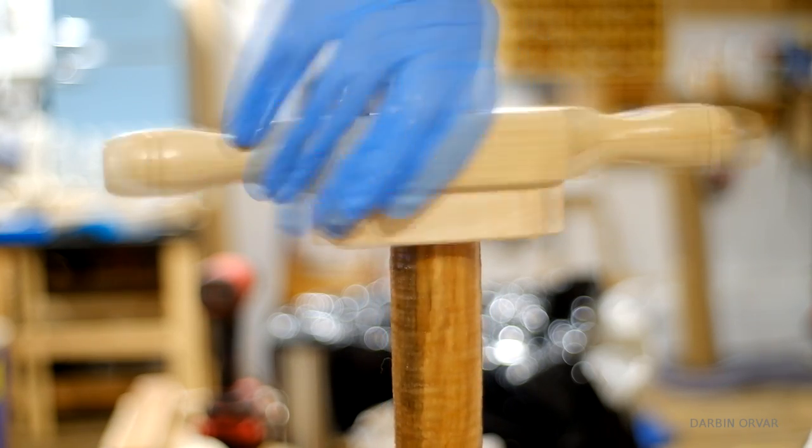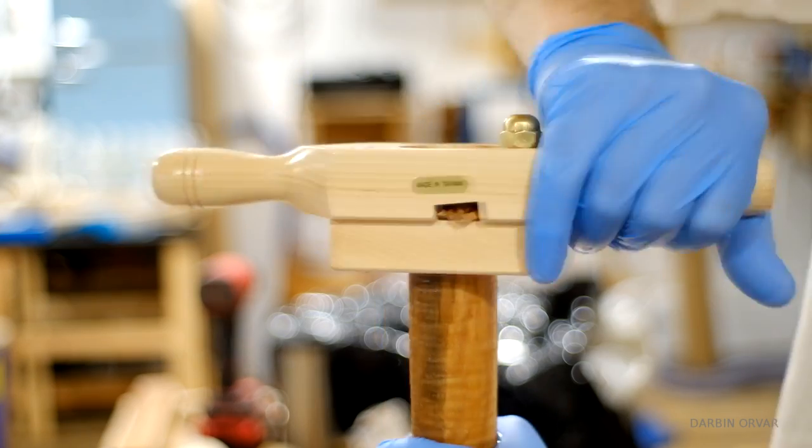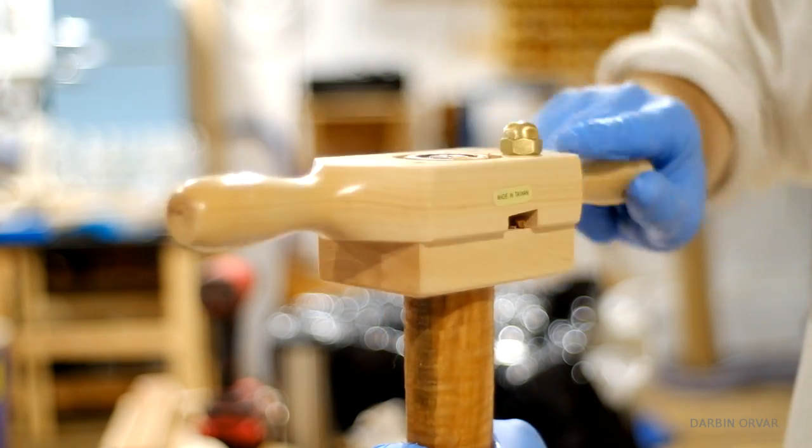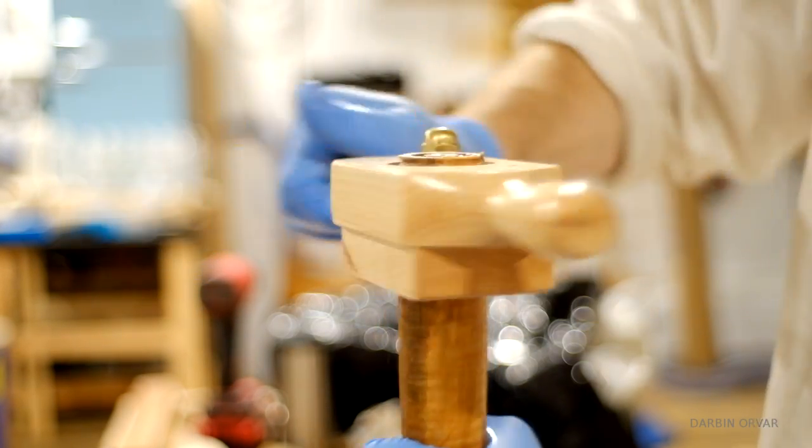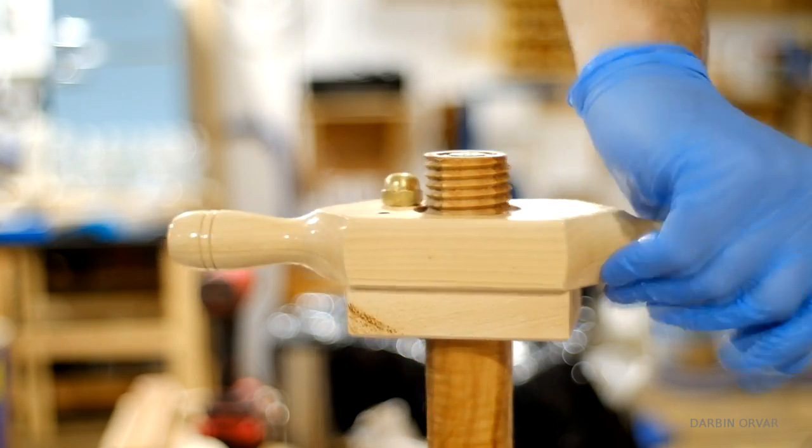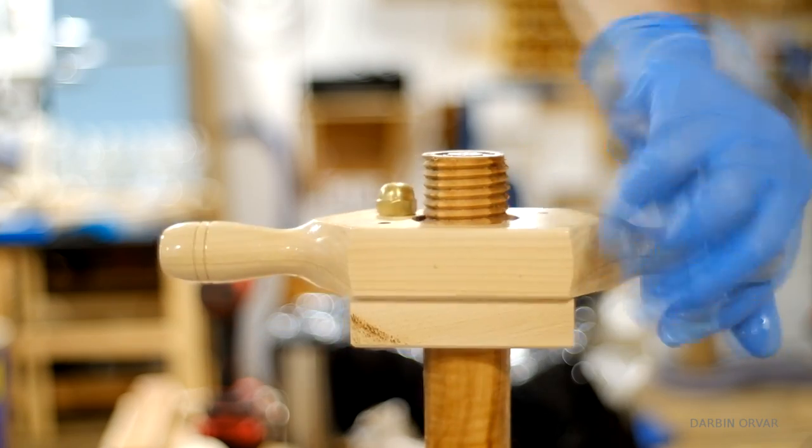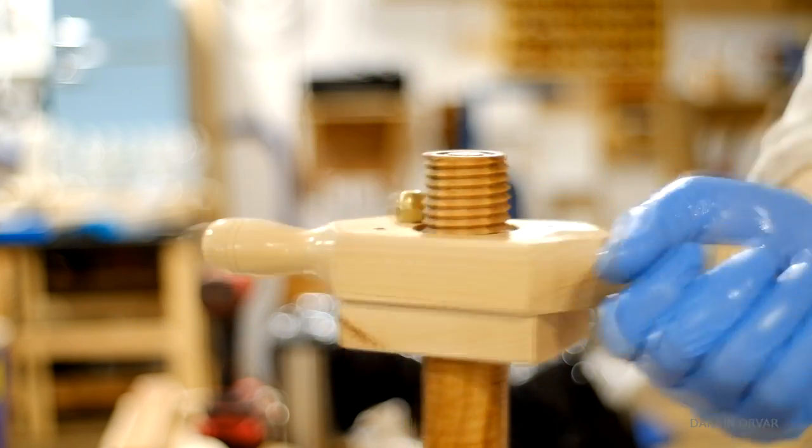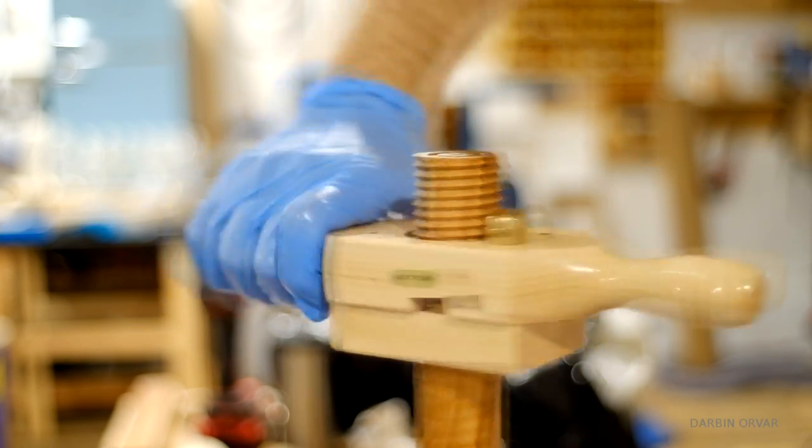I'm making threads here with the thread box. There's a little section where the chips fall out. The tool is quite easy to use. Once you get the first thread speed it catches on and then it's just a matter of continuing. It's quite fun and quite satisfying to cut threads like this.